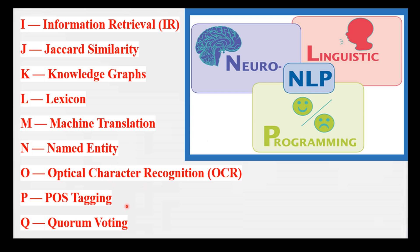P is for POS Tagging — identifying the part of speech, whether noun, verb, or other, for each word in a sentence. Imagine highlighting nouns, verbs, and adjectives in a sentence with different colors.